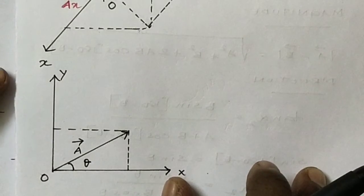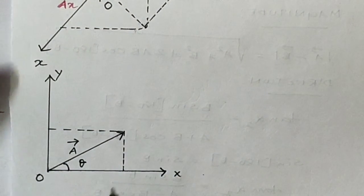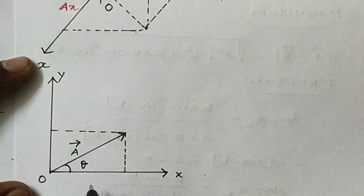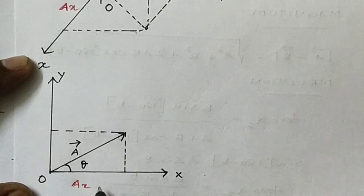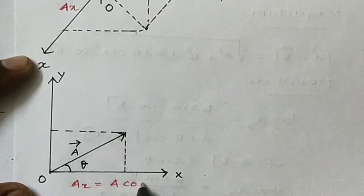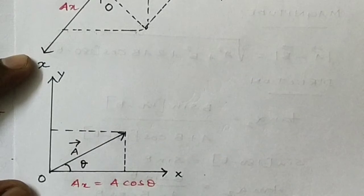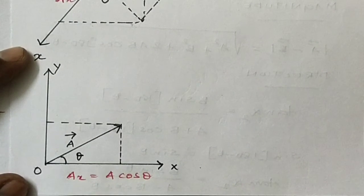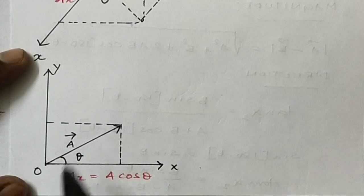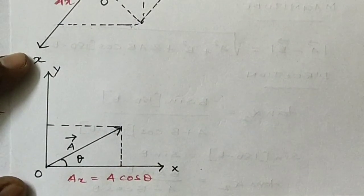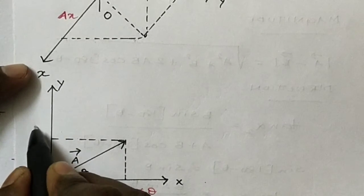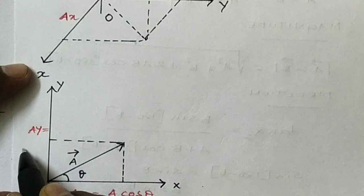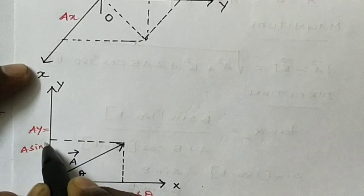Along the X axis and Y axis, the components are resolved as follows: AX means A cos theta — already we know cos theta gives the horizontal, that is the X direction. Vertical means AY, that is A sine theta. So AY equals A sine theta.